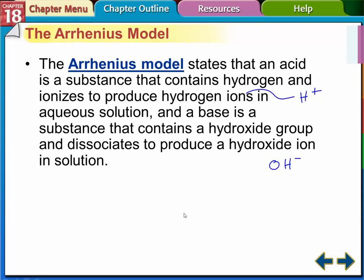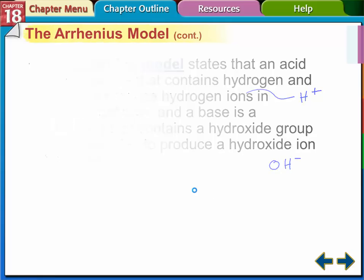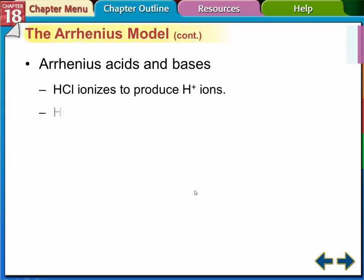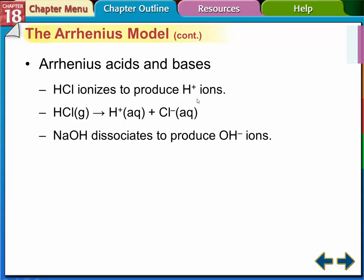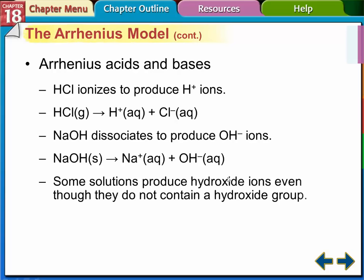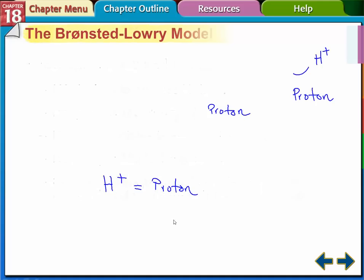The Arrhenius model states that an acid is a substance that contains hydrogen and ionizes to produce hydrogen ions. The base has a hydroxide group and dissociates to produce a hydroxide ion. So a couple of Arrhenius examples: hydrogen chloride is the acid — it has the H and ionizes to produce hydrogen ions. Sodium hydroxide is the base — it produces OH ions. Those are perfect models for the Arrhenius model, but not all acids and bases fit it.